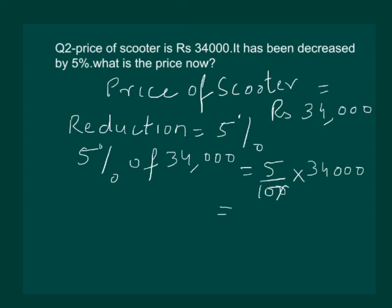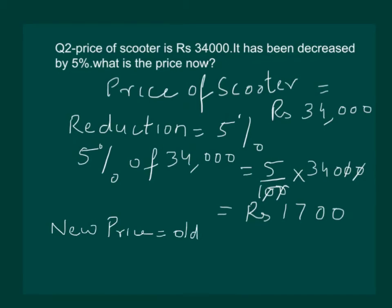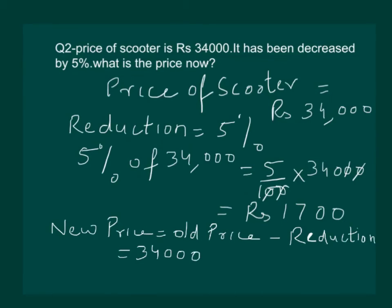That is 5/100 multiplied by 34,000, which gives us Rs 1,700. Now the new price of this scooter would be old price minus reduction. Since the price is decreasing, new price equals old price minus reduction, that is 34,000 minus 1,700, which equals Rs 32,300.